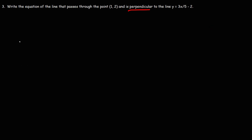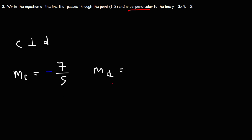Here's another example: if line C is perpendicular to line D and the slope of line C is negative 7/5, then the slope of line D is positive 5/7. To find the slope of a perpendicular line, find the negative reciprocal — change the sign and flip the fraction.